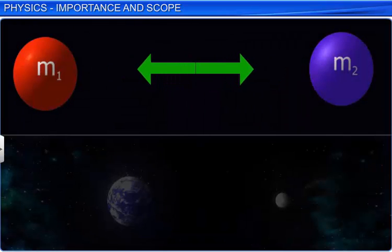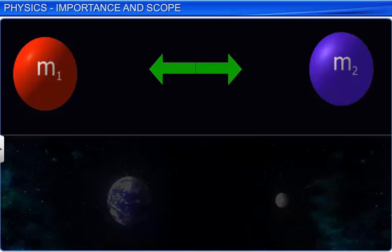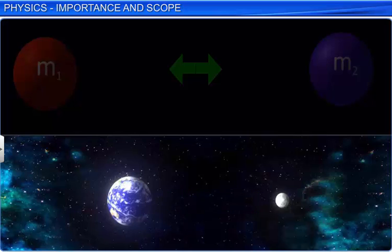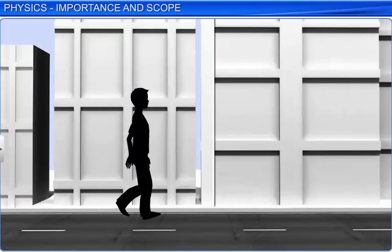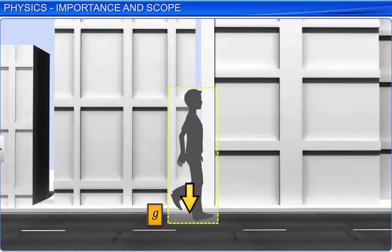The gravitational force is the force of mutual attraction between any two objects by virtue of their masses. It is a universal force meaning all objects in the universe exert a gravitational force on each other. We are able to stand or walk due to Earth's gravitational force exerted on us by the Earth.